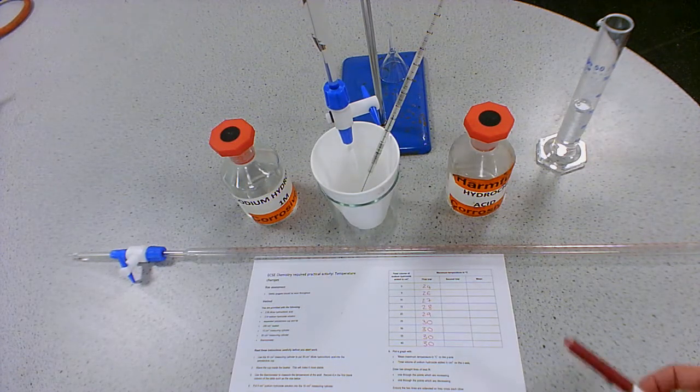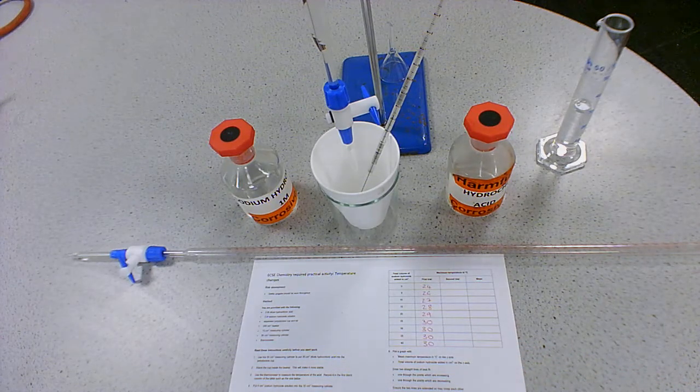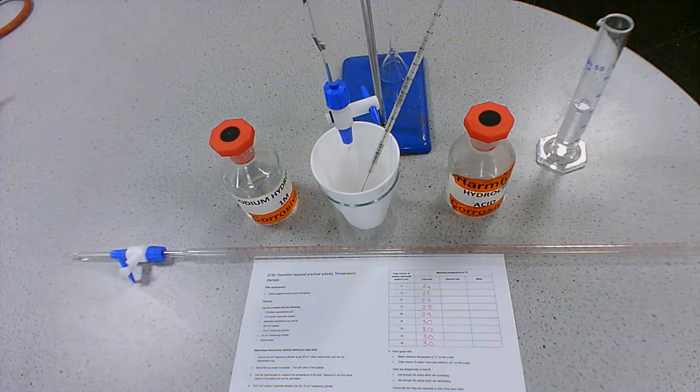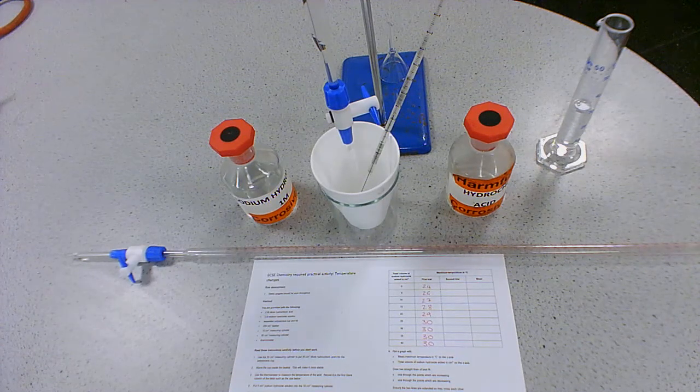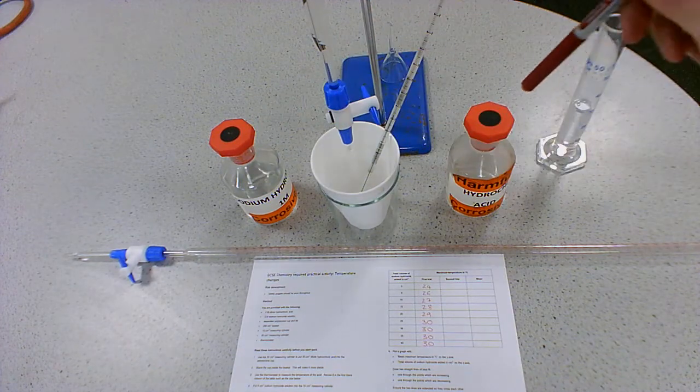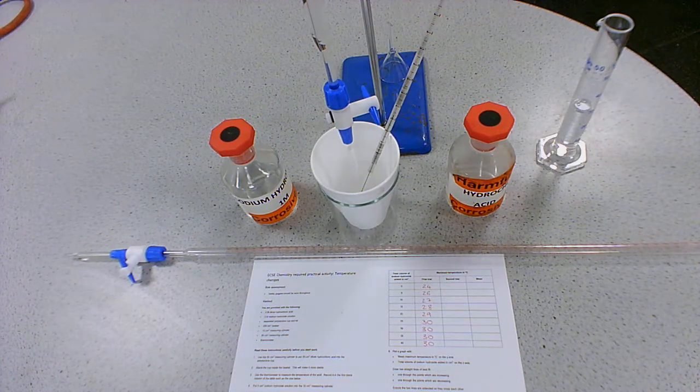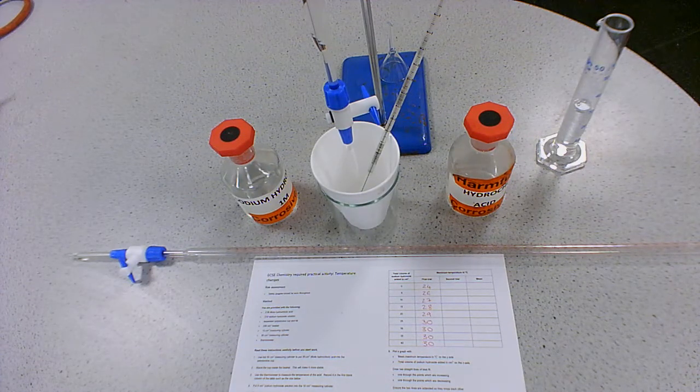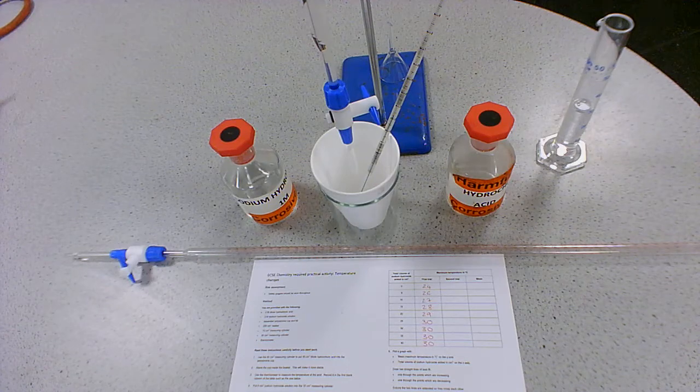So what we're going to be doing is reacting hydrochloric acid and sodium hydroxide. And what we're going to do is we're going to use the temperature changes of the reaction in order to determine how much sodium hydroxide is needed to neutralize hydrochloric acid. So we'd be able to determine the end point of the reaction by finding the peak temperature change.